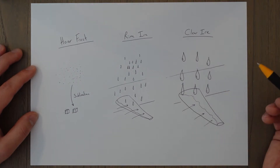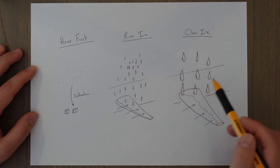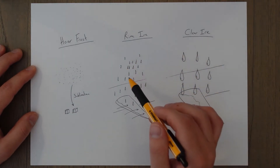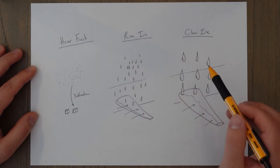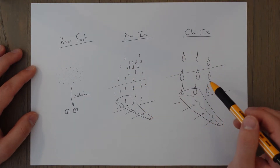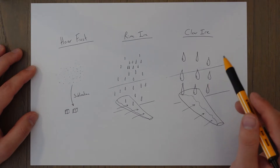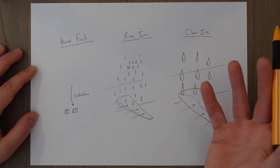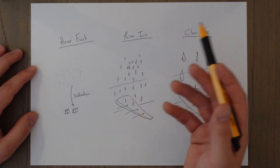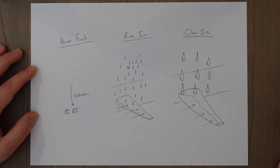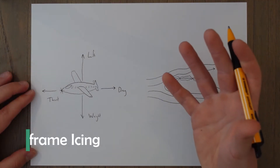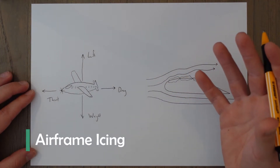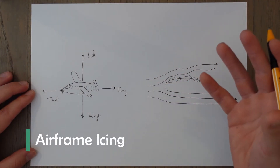You could also encounter a mixture of both small and large supercooled water droplets within one cloud, and in that case you would have a mixture of rime ice and clear ice.